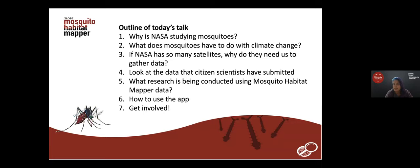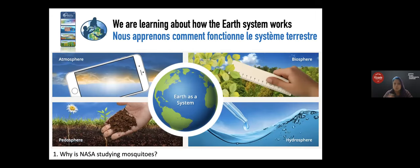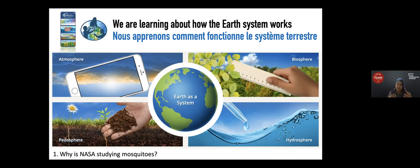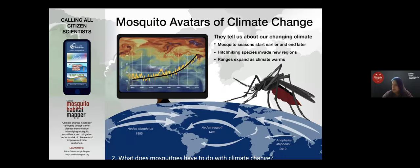Why is NASA studying mosquitoes? Most people think NASA is focused on space — telescopes looking at other worlds, the moon, other planets — but most of NASA's science is actually looking at our own planet, Earth. Mosquitoes are one part of the Earth system. When we look at what happens with climate and weather, mosquitoes respond to it — so it's a way to see how things are changing just by watching mosquitoes.